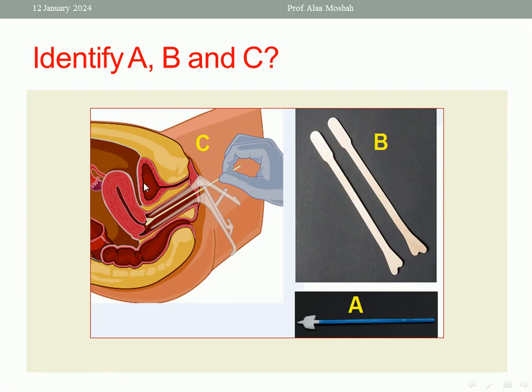CIN means cervical intraepithelial neoplasia. When to start this screening program? In some countries, it started at the age of 21, then repeated every 3 years till the age of 29. Then from the age of 30 up to the age of 65...